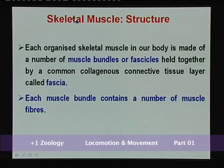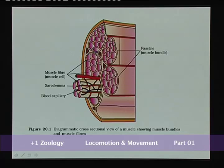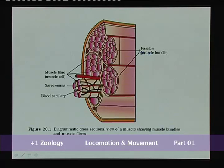In this chapter, we concentrate on skeletal muscle. Each organized skeletal muscle is made up of a number of muscle bundles called fascicles, held together by a common collagenous connective tissue layer called fascia. The entire muscle is divided into bundles called fascicles, which are kept in position by the connective tissue called fascia.